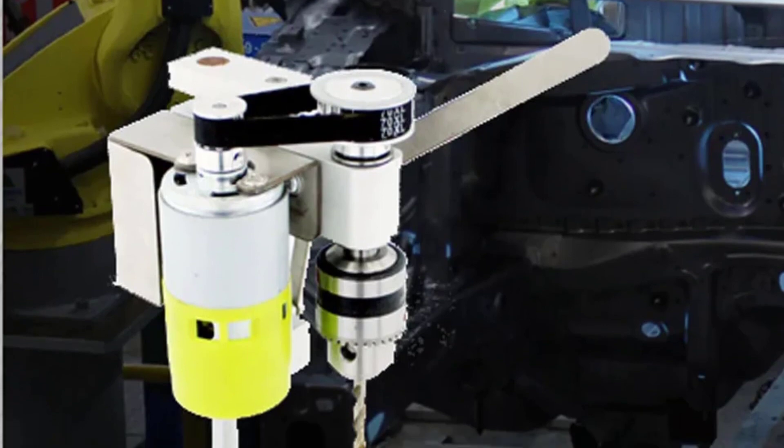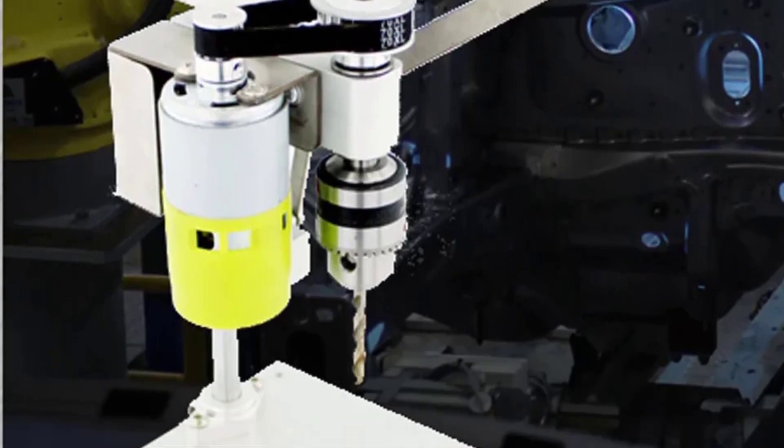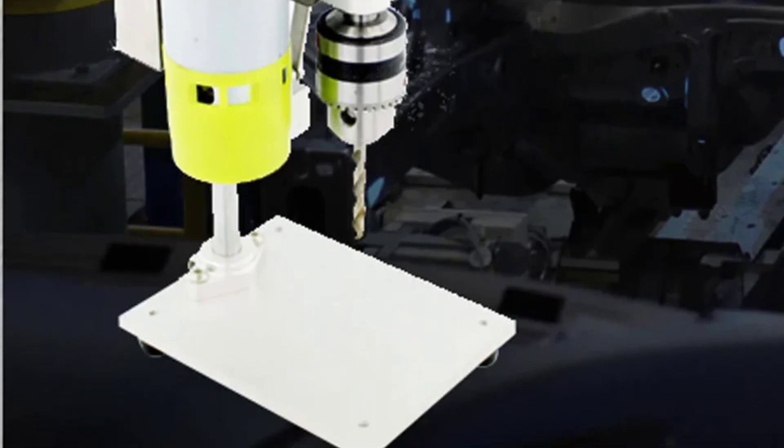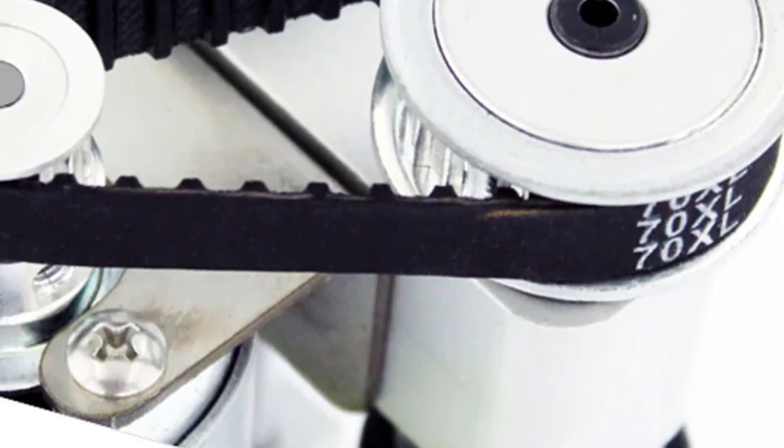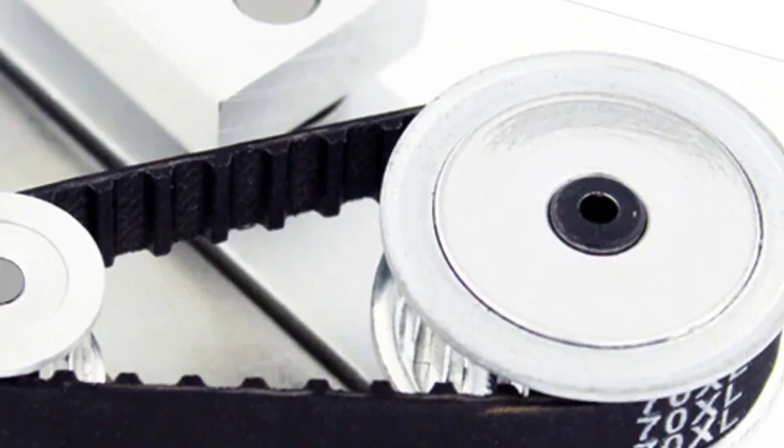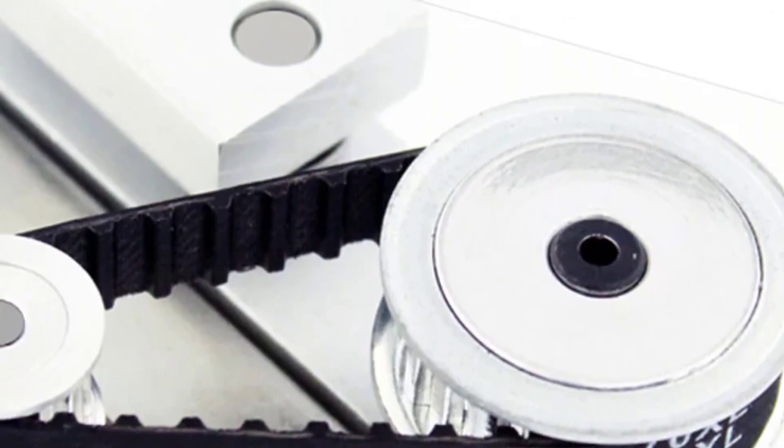The B12 Chuck model 1.5-10mm further enhances its adaptability, accommodating a range of drill bits for different tasks. One standout feature is the variable speed control, with an output speed ranging from 1,000 to 4,500 RPM. This allows for precise control over the drilling process, making it suitable for tasks that require different speeds.